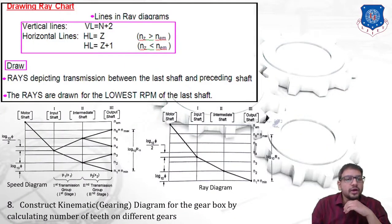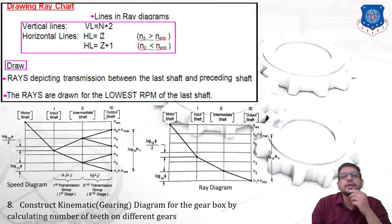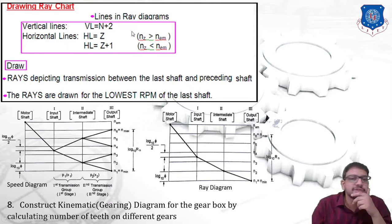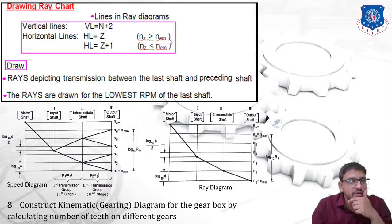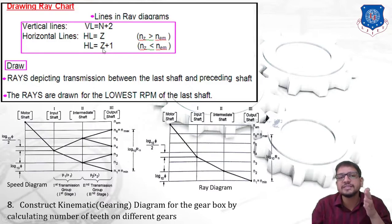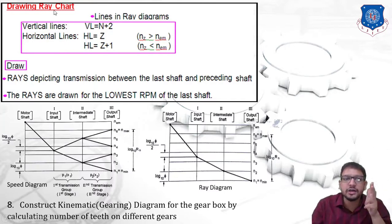While drawing a ray diagram, vertical lines should equal n plus 2, where n is the number of stages. Horizontal lines should equal Z if the maximum speed of the gearbox is greater than motor speed (NEM). If motor speed is greater than maximum gearbox speed, horizontal lines equal Z plus 1. So remember: vertical lines equal n plus 2, and horizontal lines are either Z or Z plus 1 depending on the motor speed relationship.